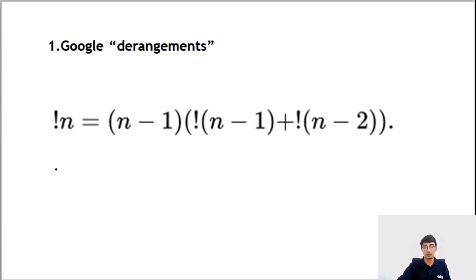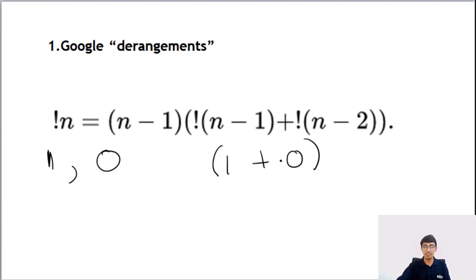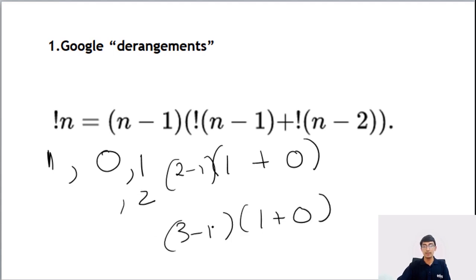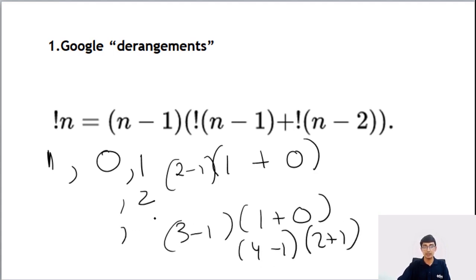For N equals 0, by convention it's 1. For N equals 1, it's 0. For every number after that, you take the sum of the previous two numbers — a little bit like Fibonacci — and multiply by N minus 1. So for N=2: (2-1) × (1+0) = 1. For N=3: (3-1) × (1+0) = 2. For N=4: (4-1) × (2+1) = 3 × 3 = 9. So the series becomes 1, 0, 1, 2, 9, and keeps increasing.